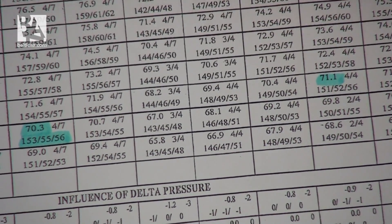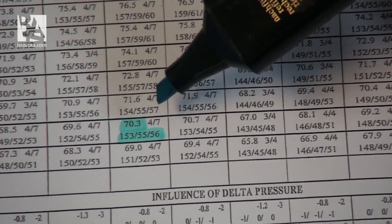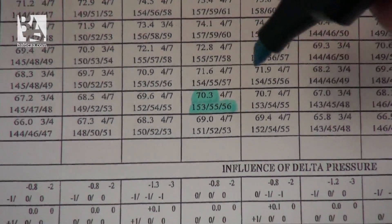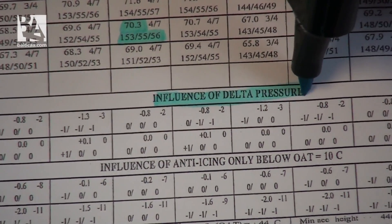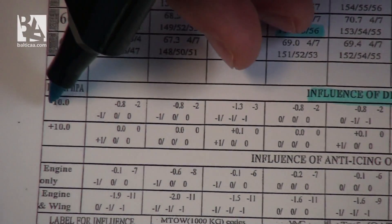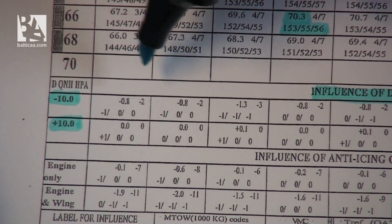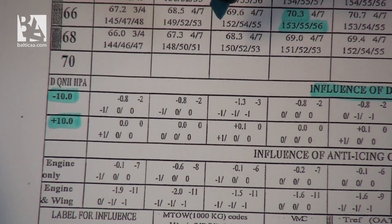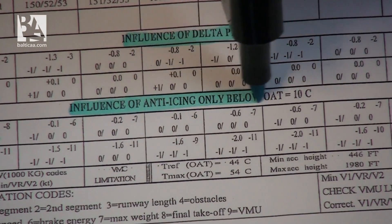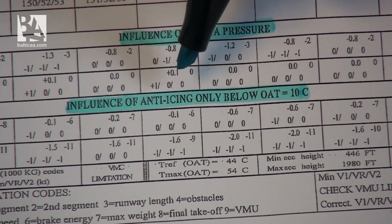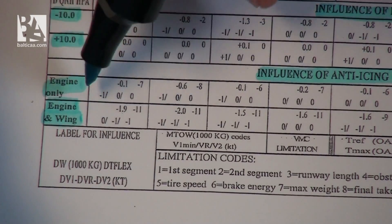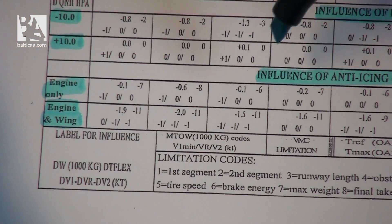Let's stay with configuration 1+F. After determining our speeds, we have to check the influence of delta pressure, which we can find here. This means that if we have a pressure different from standard — minus 10 or plus 10 hectopascals — we should do corrections accordingly. Then we have the influence of anti-icing, applicable only below an OAT of 10 degrees centigrade. We have two options: engine-only anti-ice, or engine and wing anti-ice, and we would apply the corrections noted in this table.